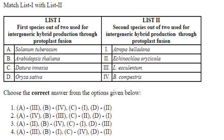Matching the first and second species used for intergeneric hybrid production through protoplast fusion: A3 — Solanum tuberosum and Lycopersicon esculentum (potato and tomato); B4 — Arabidopsis thaliana and B. campestris; C1 — Datura innoxia and Atropa belladonna; D2 — Oryza sativa and Echinochloa oryzicola. The answer is option 1: A3, B4, C1, D2.